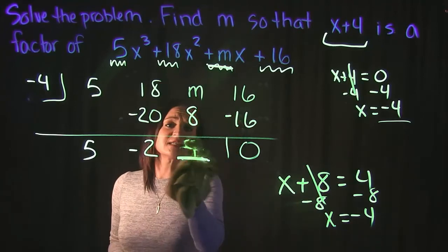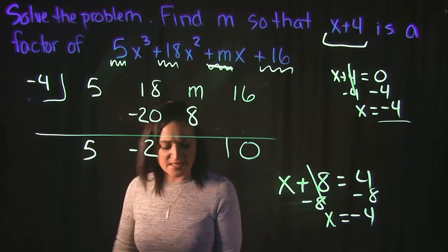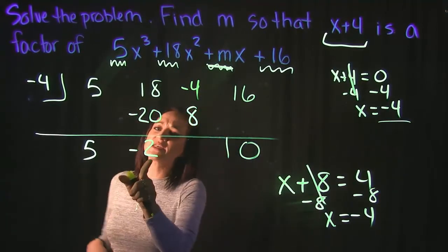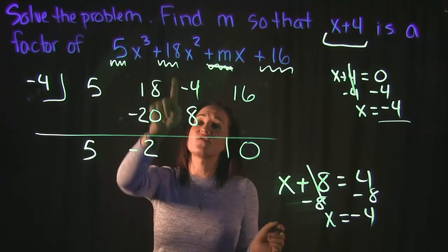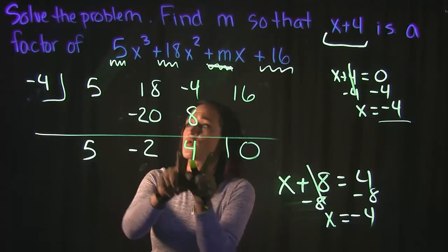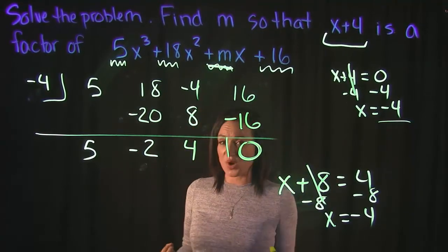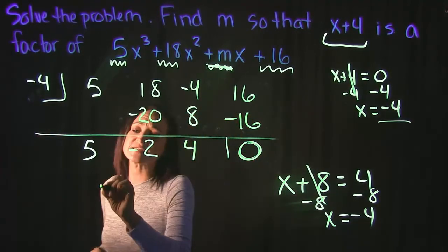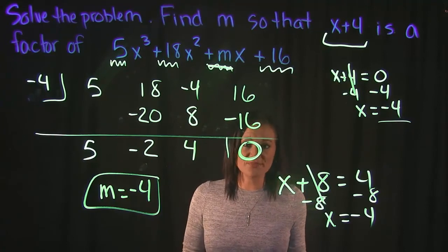Let's test this to confirm. If m equals negative 4, we add negative 4 plus 8 to get positive 4. Then 4 times negative 4 is negative 16, and 16 plus negative 16 gives us 0. So indeed, x plus 4 is a factor of this function. That means m must equal negative 4 in order for this to be true. And that's it for this video.